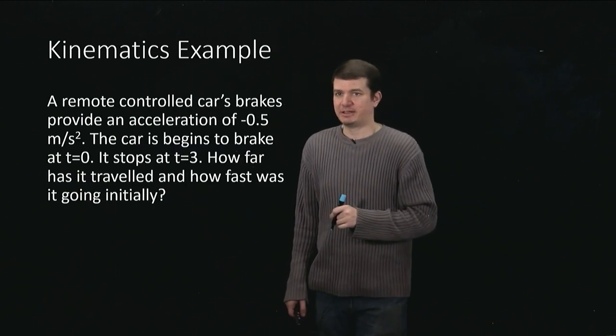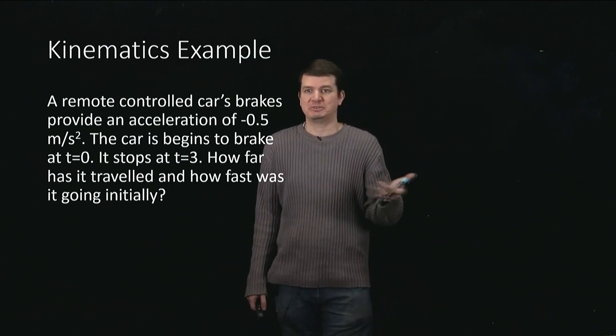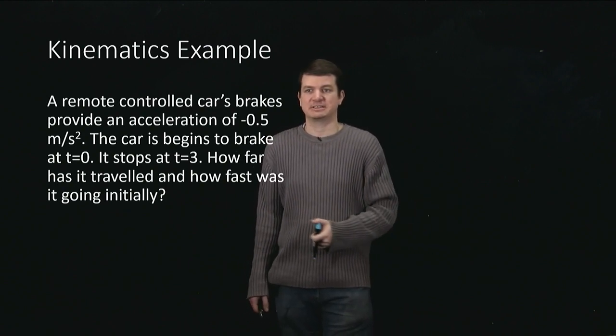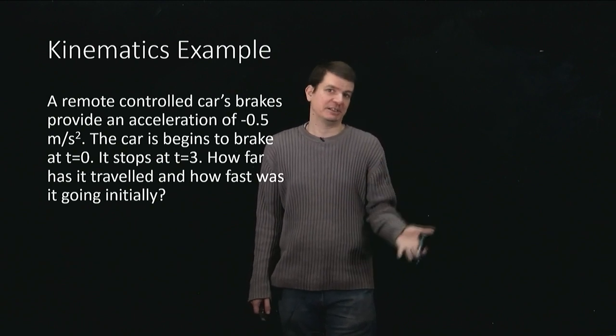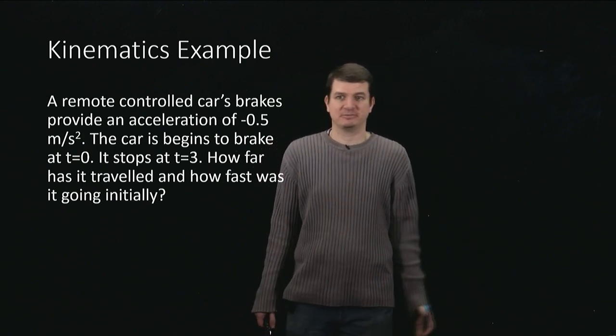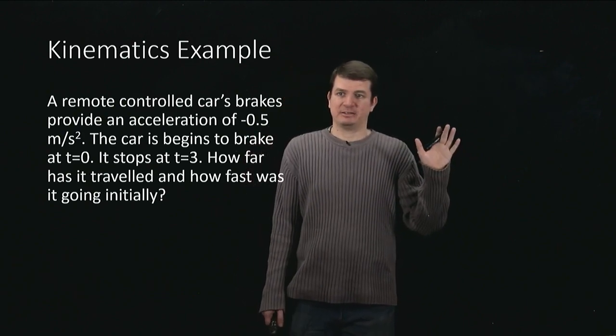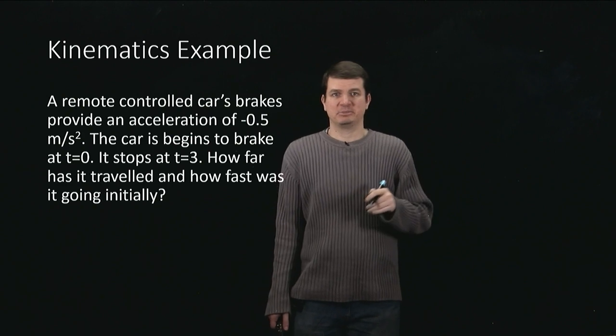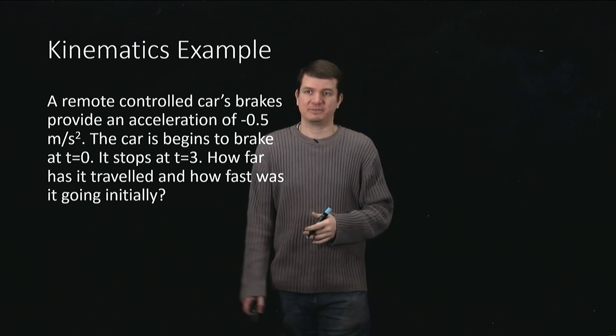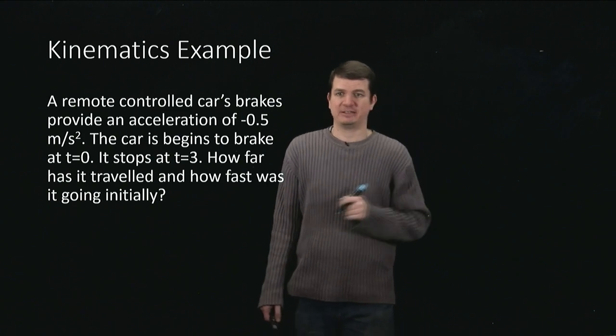The example we'll take is this question here. Suppose we've got some remote-controlled car, and its brakes are capable of supplying an acceleration of negative 0.5 meters per second squared, a nice constant acceleration. And the negative sign is telling me it's really a deceleration, or more importantly, it's just against the direction of whatever the direction of the velocity is. And then we're told that the car begins to stop, applies its brakes at a time of 0 seconds, and it finishes stopping at t equals 3. We haven't actually specified the unit, but we'll take it to be seconds. And then we ask, how far has it traveled, and how fast was it going initially?